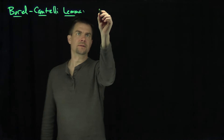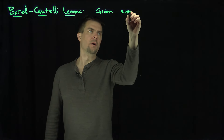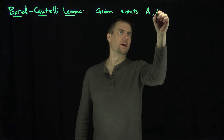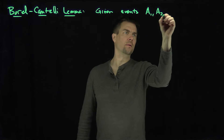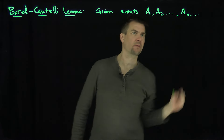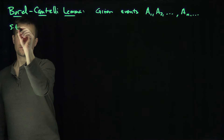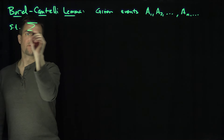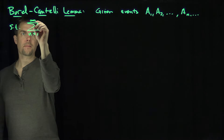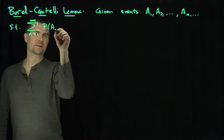It says: given events A1, A2, AN, and so on — an infinite collection of events — such that the sum of the probabilities, where n goes from 1 to infinity, of the probability of AN is less than infinity,